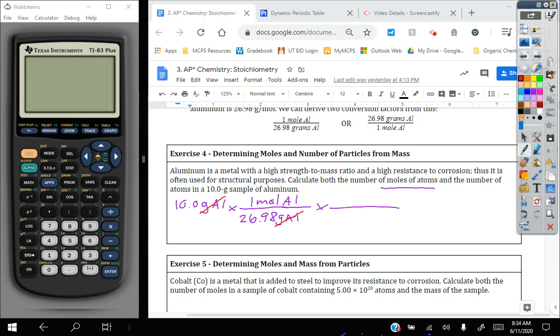Since we're now left in moles of aluminum, I need moles of aluminum on the bottom. Make sure I'm consistent with my colors here. So one mole of aluminum on the bottom and I want to find number of atoms for my final answer. So 6.02 times 10 to the 23rd atoms of aluminum on top. Now if I check my units, moles of aluminum on top of my first conversion factor and moles of aluminum on the bottom of my second conversion factor allows both of those to cancel and my final answer will be in units of atoms of aluminum.